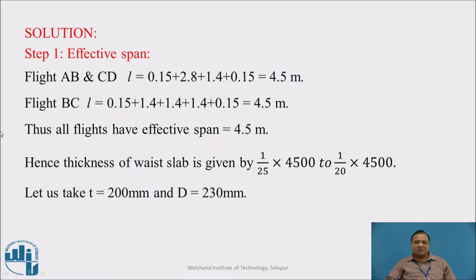Here we get 4.5 meter and BC is 0.15, 1.4, 1.4, 1.4, 1.4 plus 0.15, that is 4.5 meter. All flights have effective span of 4.5 meter. Hence the thickness of waist slab is 1/25th of span to 1/20th of span, so overall thickness taken as 230mm.